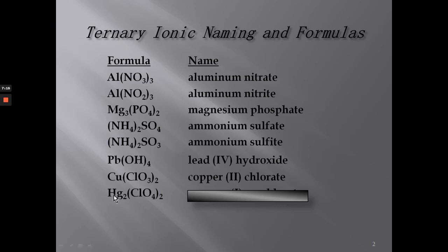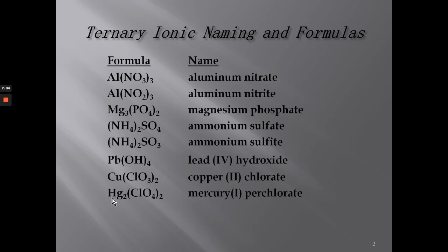Here we have mercury and Hg₂ is called mercury. We have perchlorate and we have two of those, so since this total is negative two, we get mercury(I) perchlorate. Each mercury ion has a plus two charge whether it's mercury(I) or mercury(II). A perchlorate has a minus one charge, and 'per-' means one more oxygen than an -ate. And that's how you write names and formulas of ternary ionic compounds.